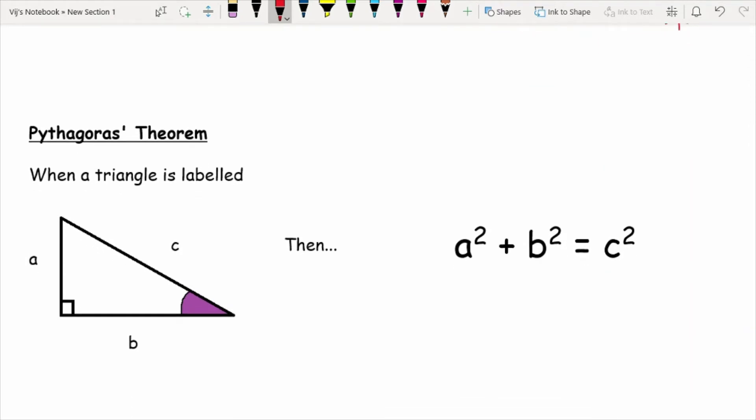is that when a triangle is labeled ABC, where the diagonal is labeled C, or the side, depending on the orientation of that triangle, the diagonal length is here, is the side that's opposite the right angle, and the other two sides are labeled A and B. Then A squared plus B squared equals C squared.